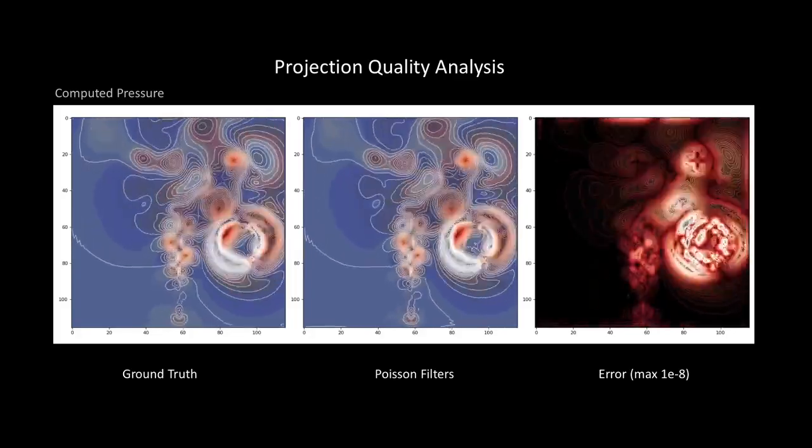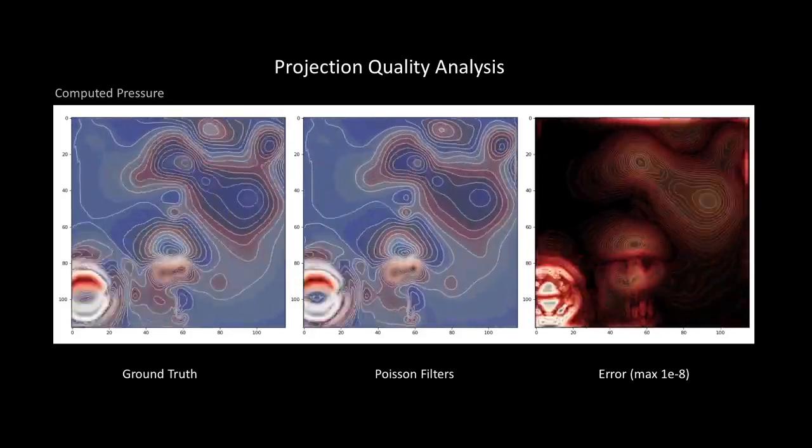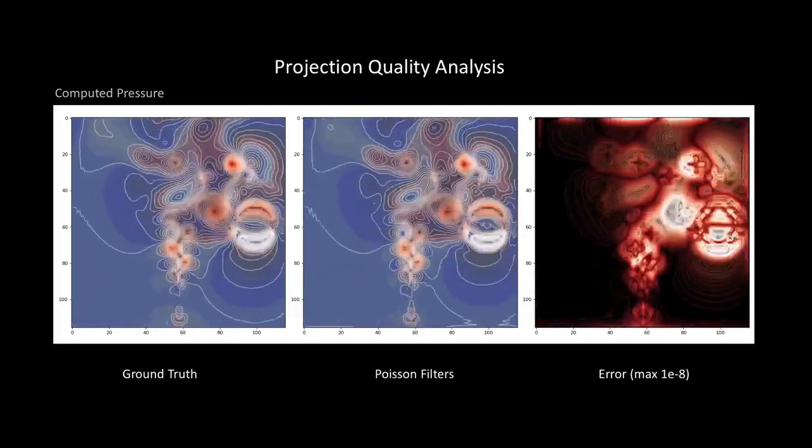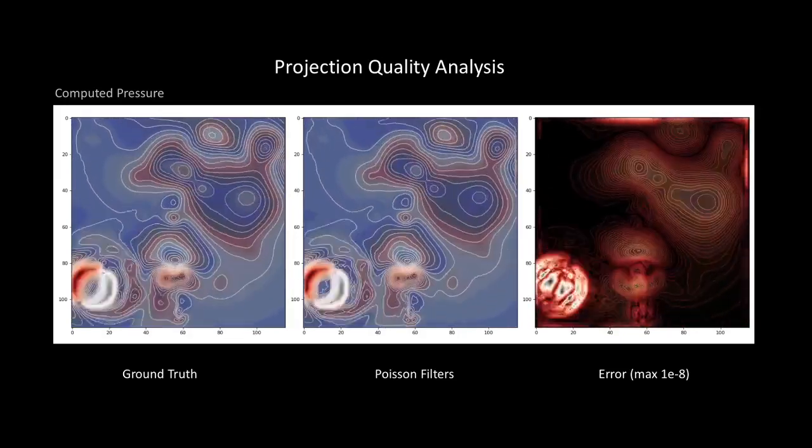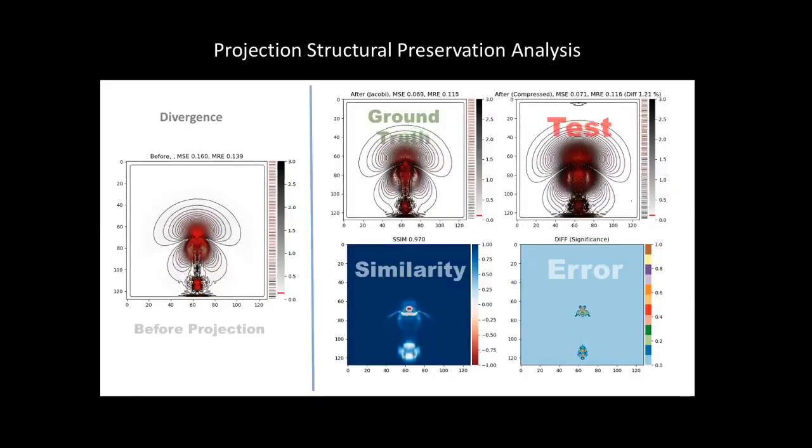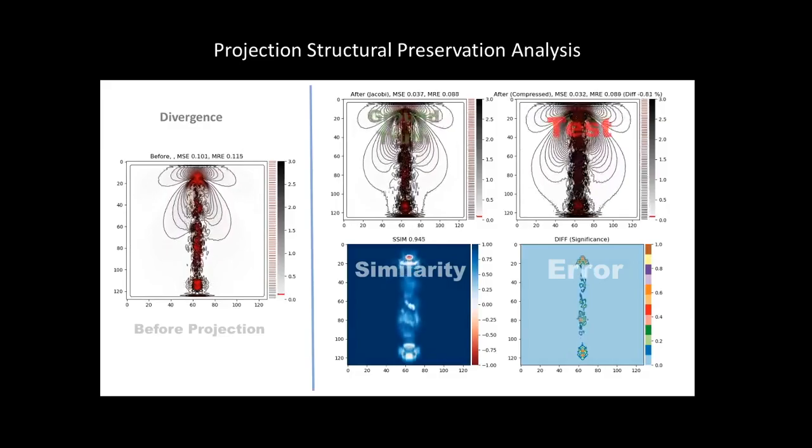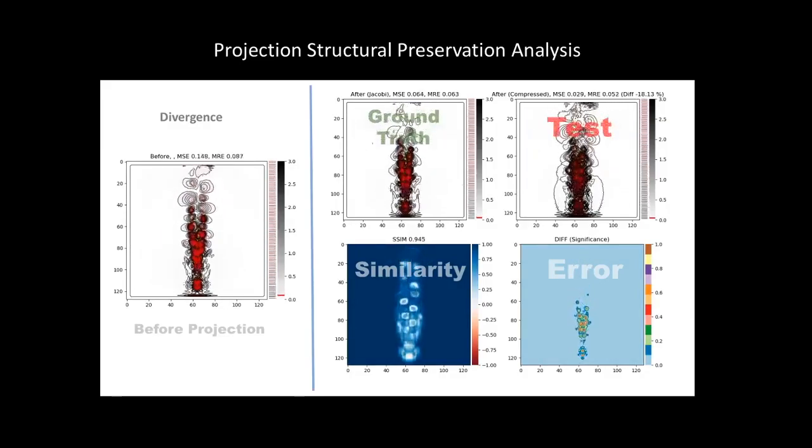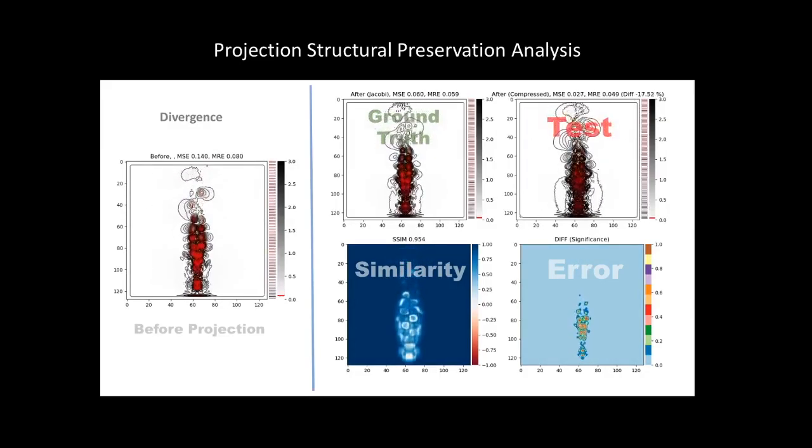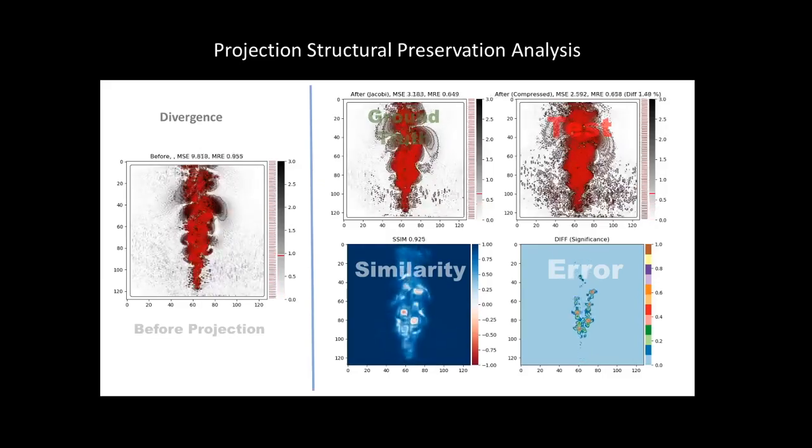Here you can see comparison of the computed pressure to the ground truth, which is the Jacobi solution where the error is quite small. To make sure our method doesn't damage the structural properties of the fluid, we also compare the divergence before and after correction.